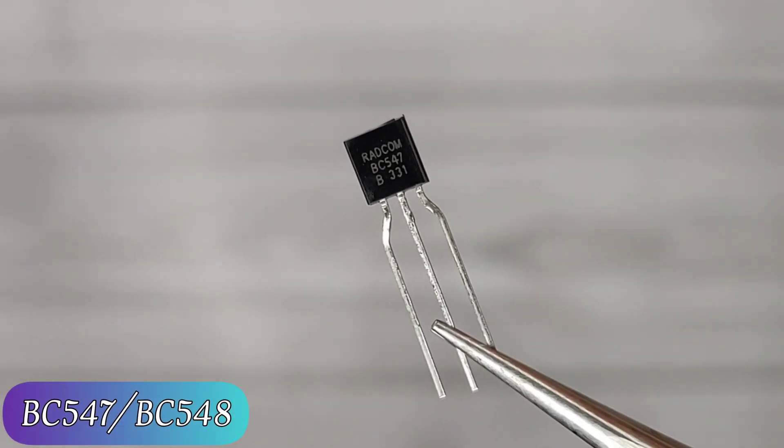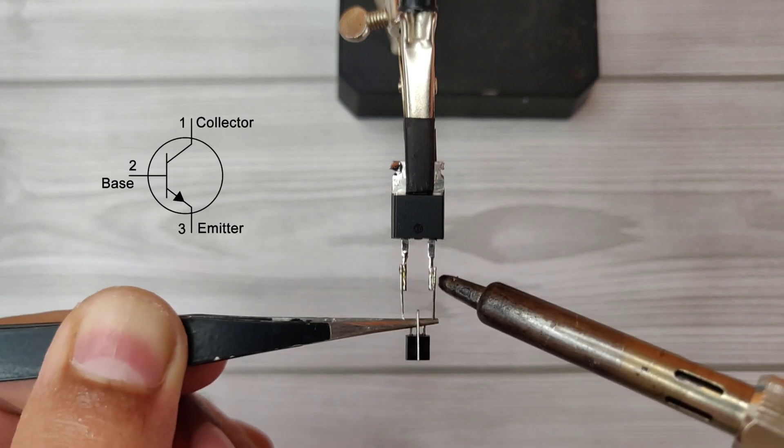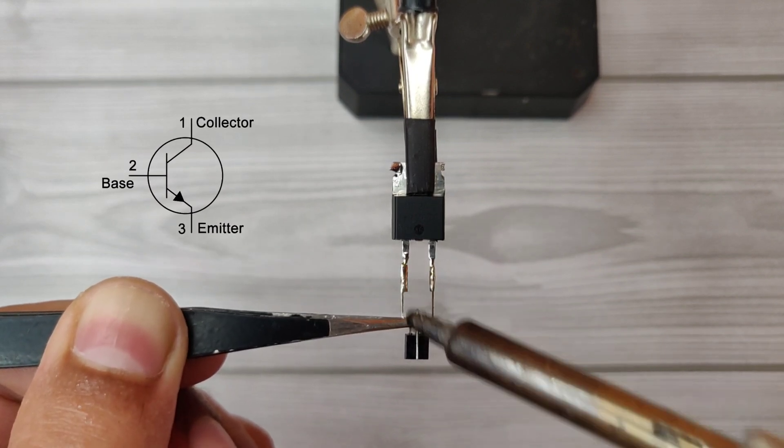Take BC547 transistor. Solder transistor collector with source pin and emitter with gate pin of MOSFET.